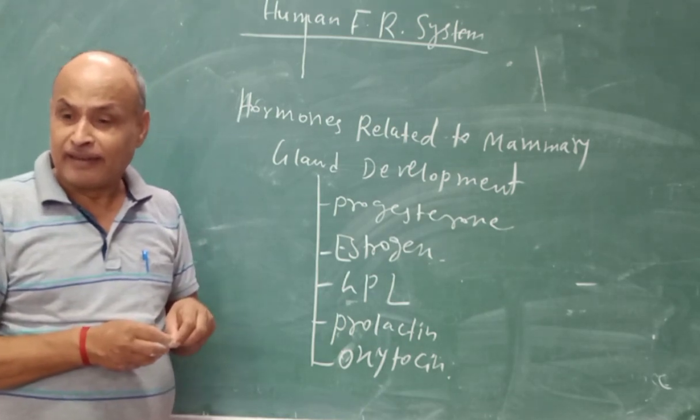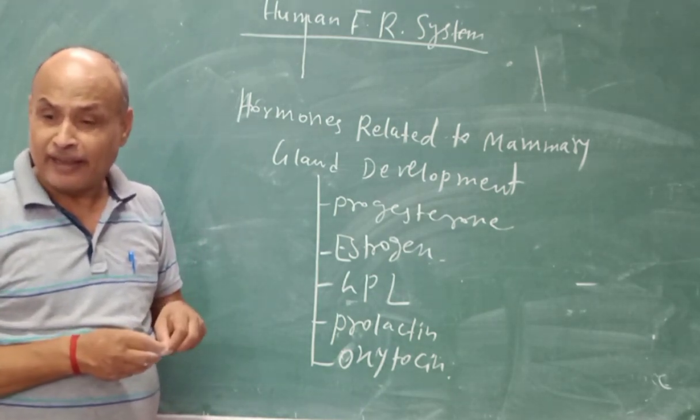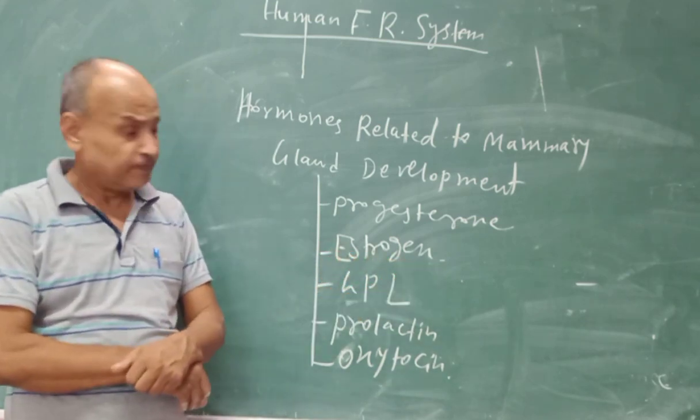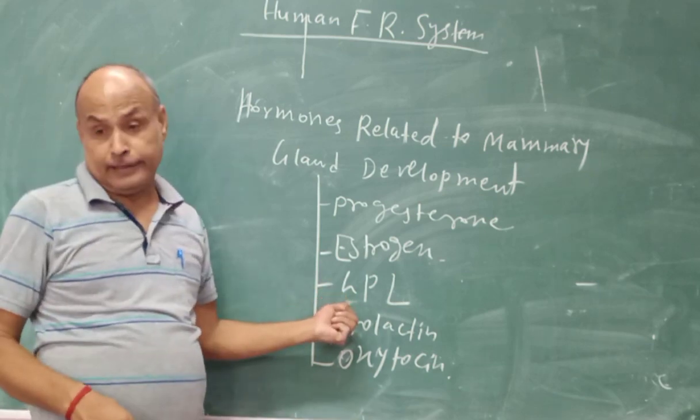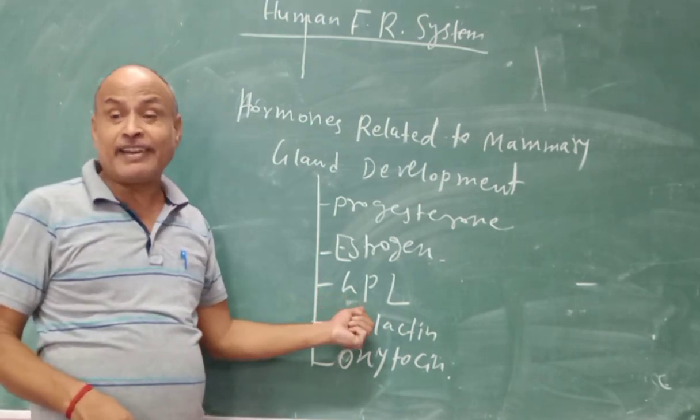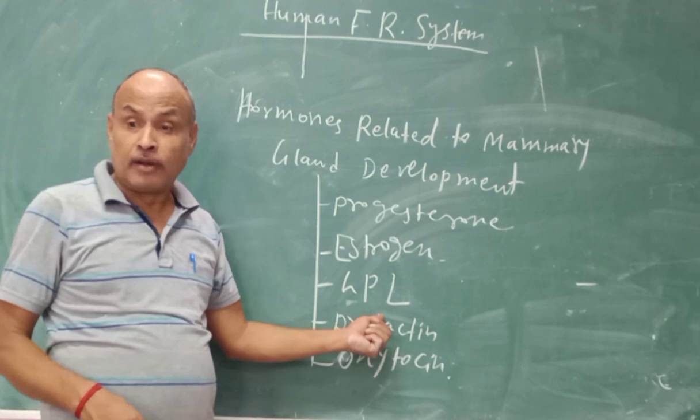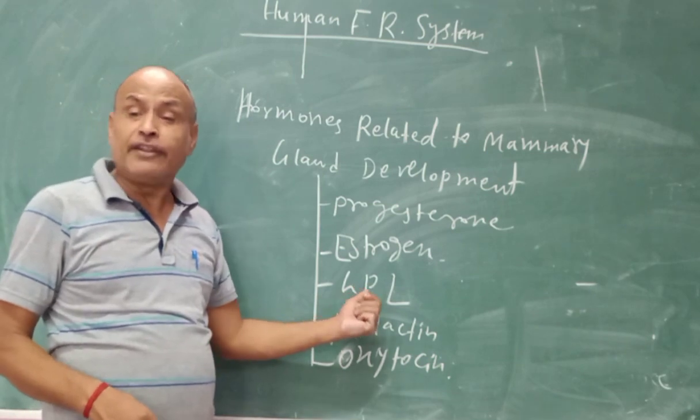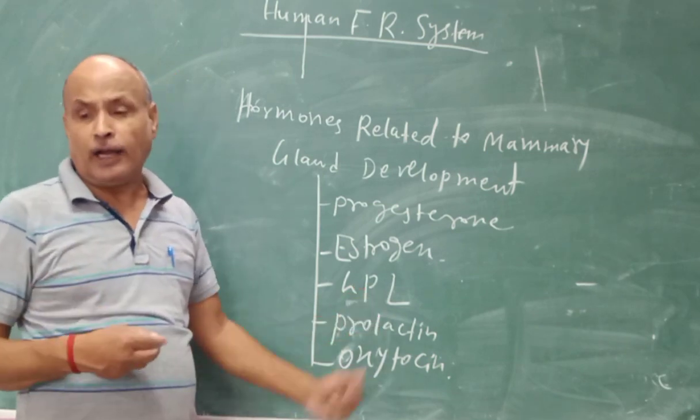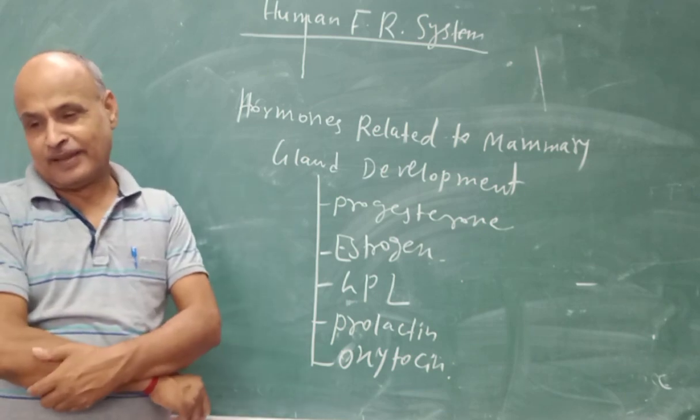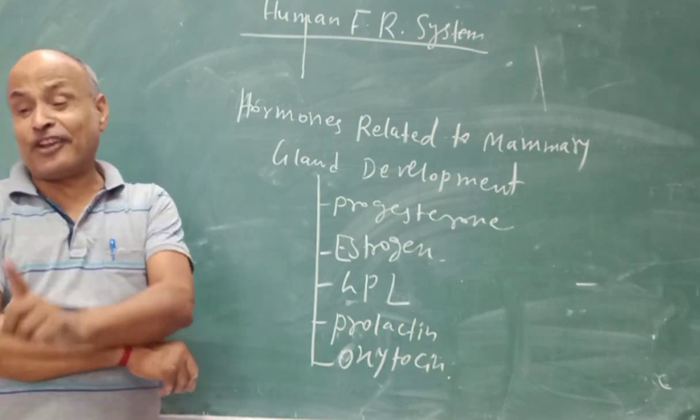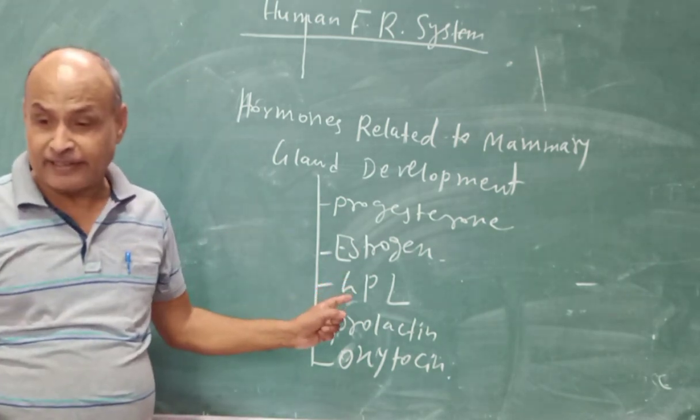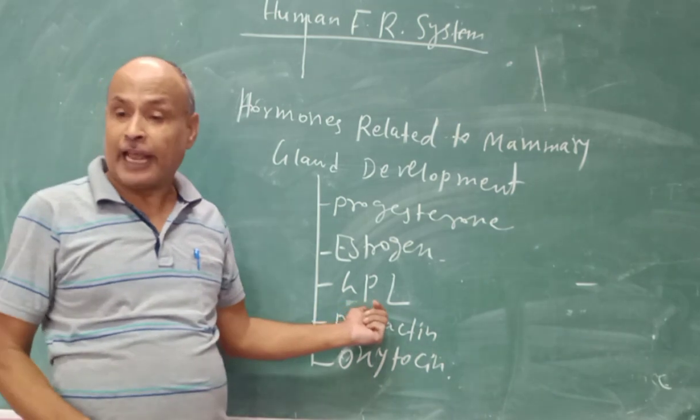The alveolar tissue collects the alveolar tissue of HPL, human placenta lactogen. And this hormone is related with the synthesis of milk. Synthesis and secretion of milk occurs by alveolar cells under the guidance of HPL.